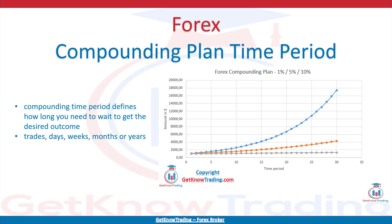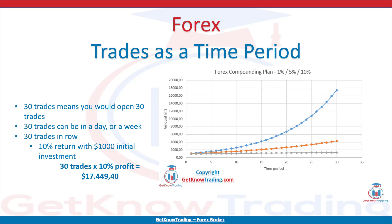If you use 30 trades as a time period, that means you would open 30 trades with profit and at the end you would have money on your account. Those 30 trades can be in a day or a week. However, the condition is to have 30 trades in a row profitable, not one losing - which is less likely to achieve. With 30 trades in a row without a losing trade, you would end up with $17,449.40 if you use 10% profit on each trade with a $1,000 initial investment.